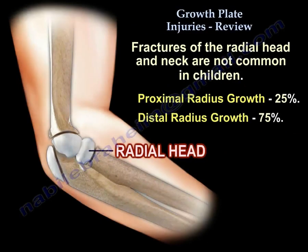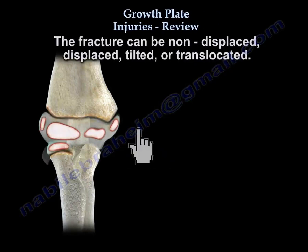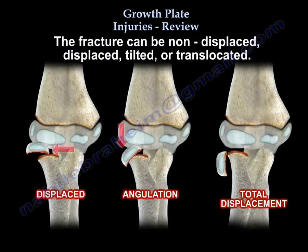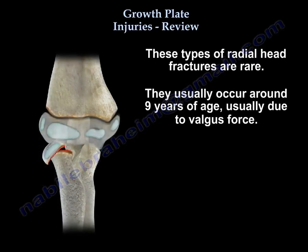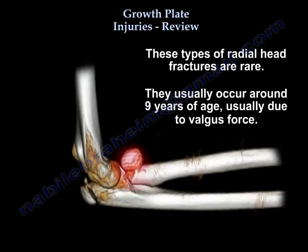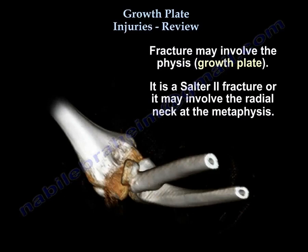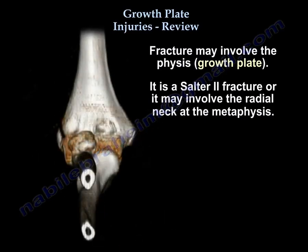Fractures of the radial head and neck are not common in children. The proximal radius contributes about 25% of the growth of the entire radius. The fracture can be non-displaced, displaced, tilted, or translocated. These fractures usually occur around age 9 due to a valgus force. The fracture may involve the physis or the radial neck at the metaphysis.